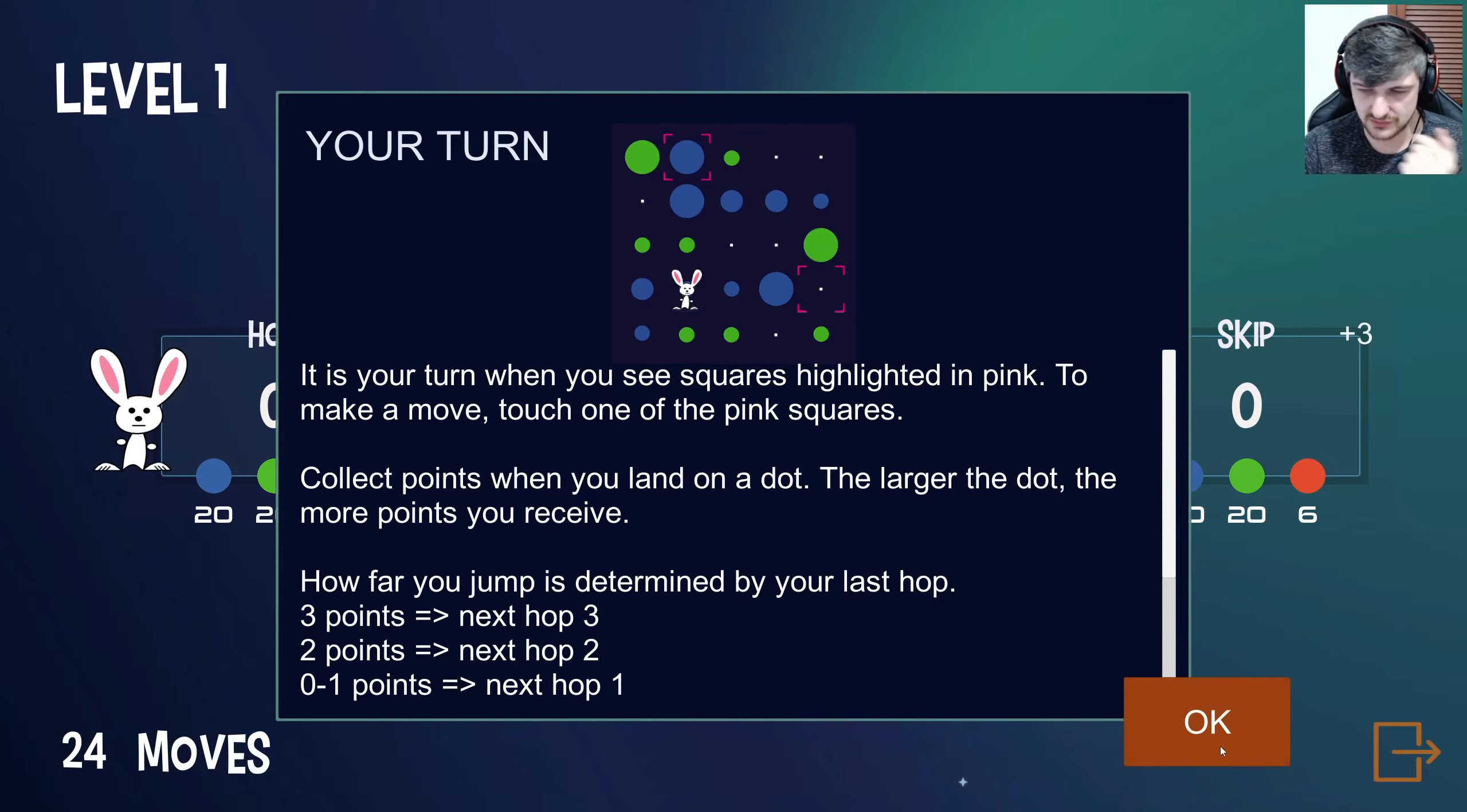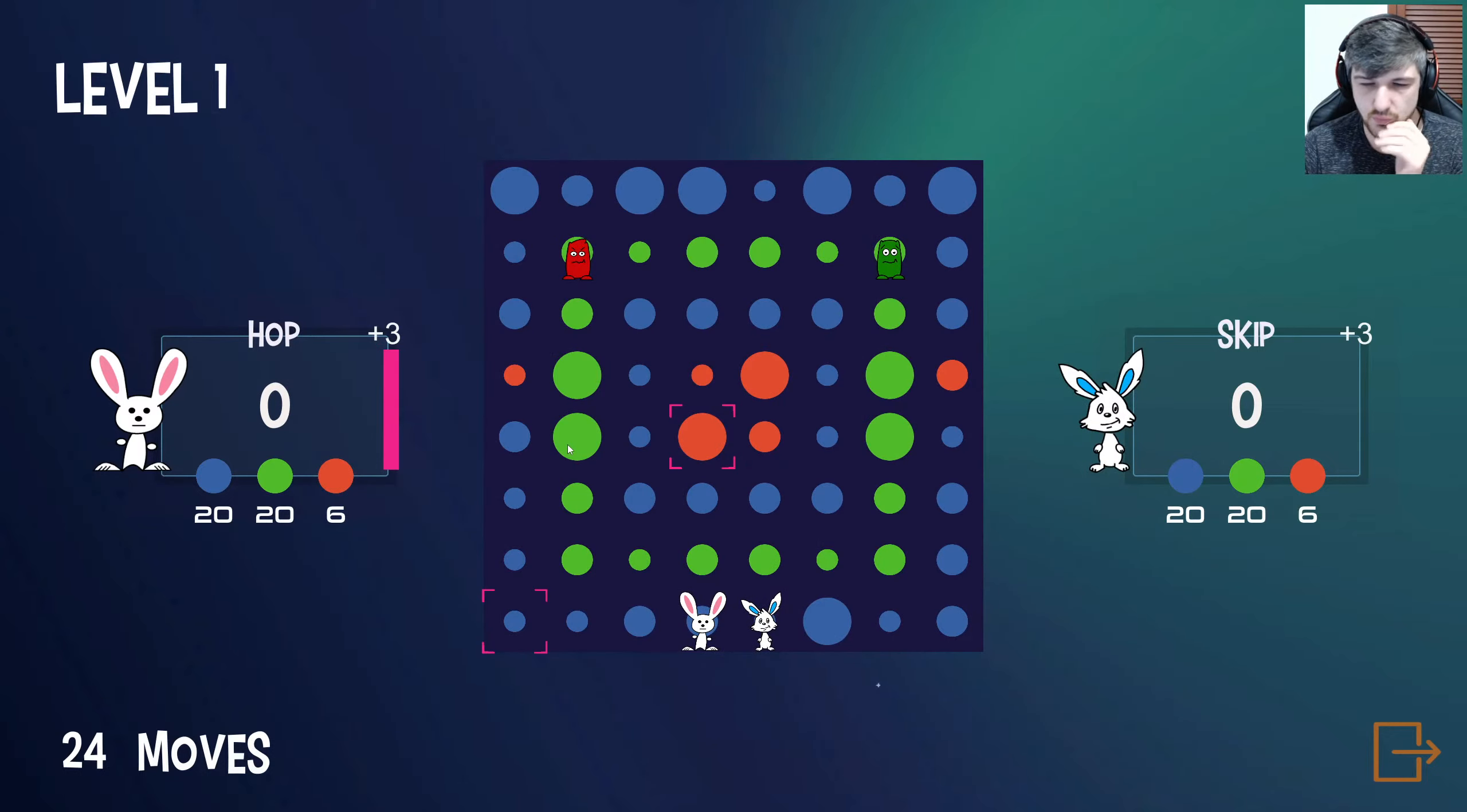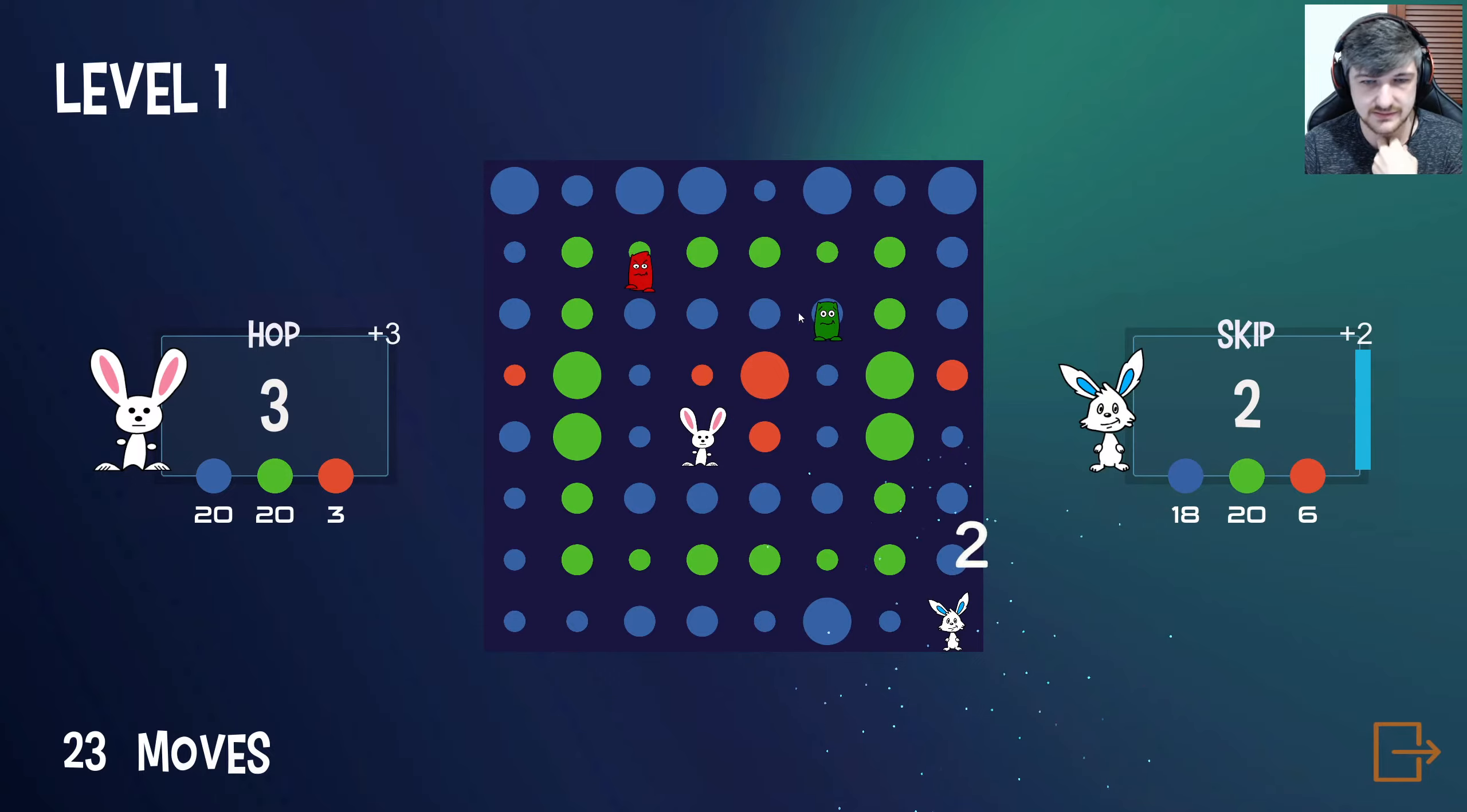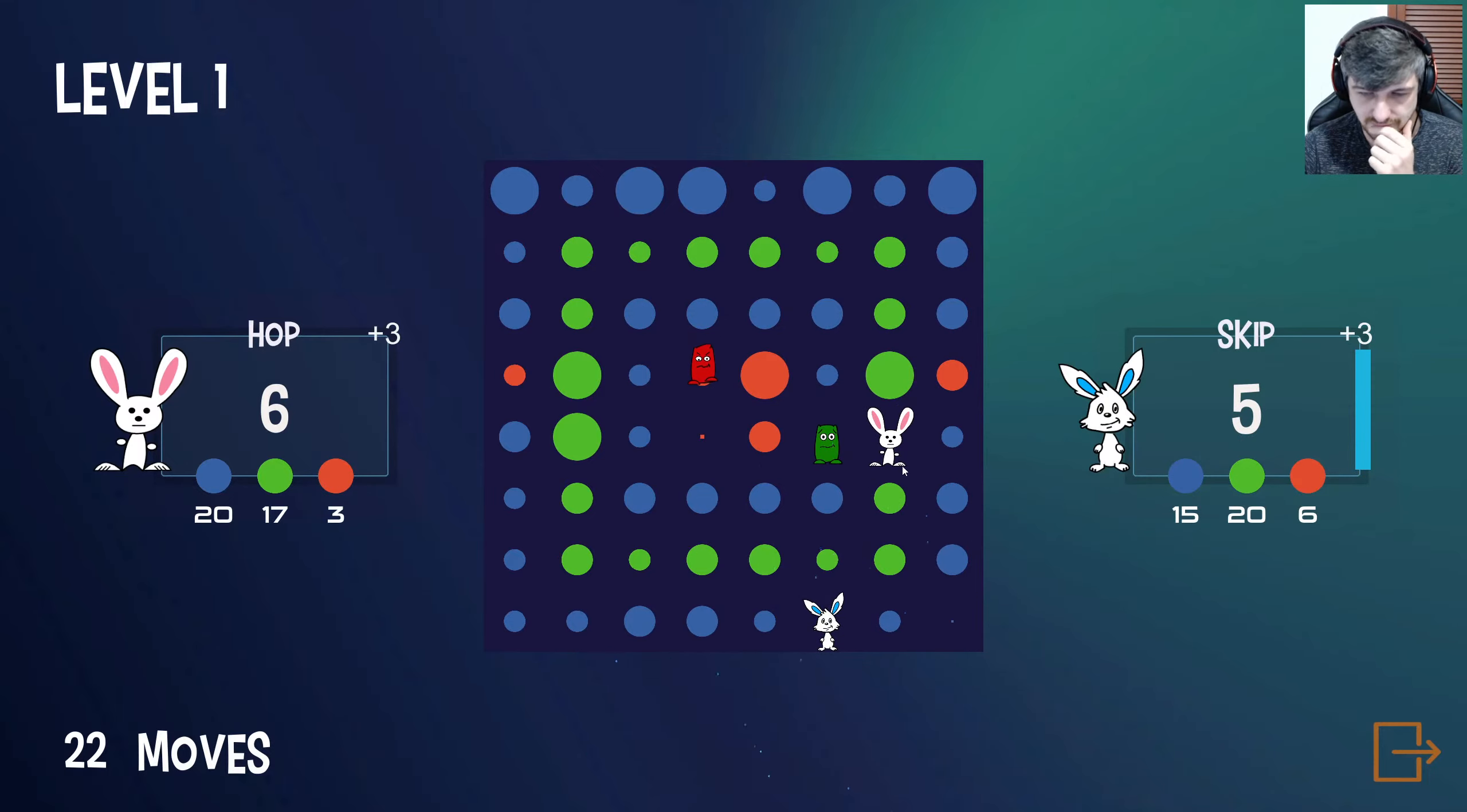Green and then blue, okay. So we've got to try and - oh, we're against an enemy. I'm jump plus three, so if I jump here I get three points, but the enemy also moves. Now I get plus three again so I can go here. Plus three is not very good for me actually. I probably still want to go up here, I guess.